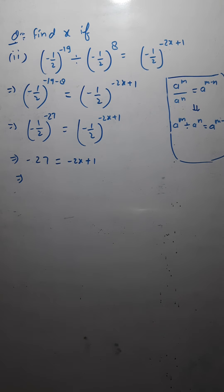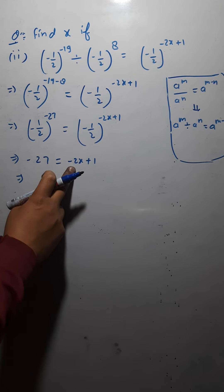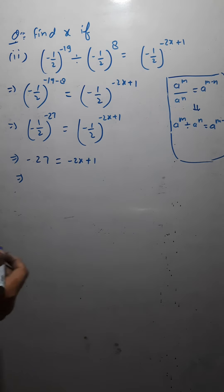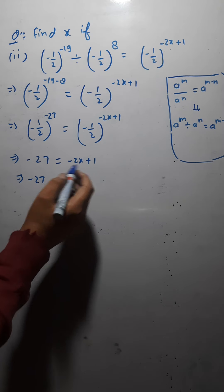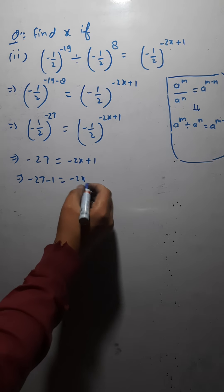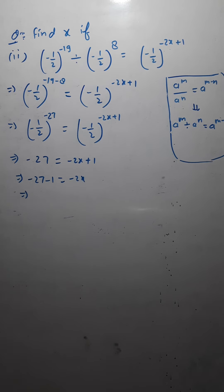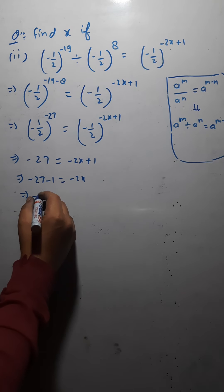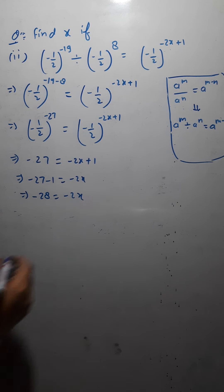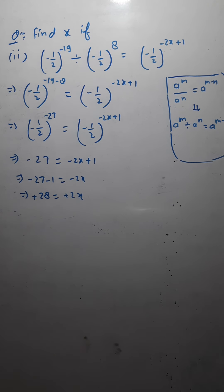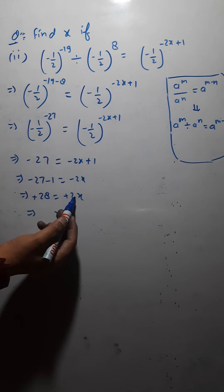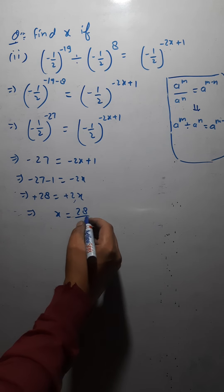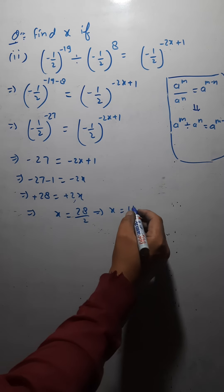For finding the value of x: minus 2x remains here, this 1 goes to the other side — its sign is plus so it becomes minus there. Minus and minus are added with sign negative, so 27 and 1 give 28. So minus 28 equals minus 2x — the minuses cancel. So x equals 28 divided by 2, which implies x equals 14.